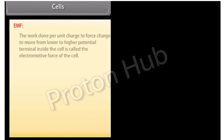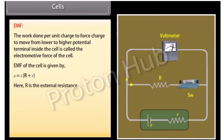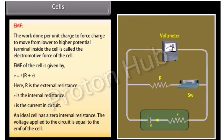The work done per unit charge to force charge to move from lower to higher potential terminal inside the cell is called the electromotive force (EMF) of the cell. EMF is given by E = I(R + r), where R is the external resistance, r is the internal resistance, and I is the current in the circuit. An ideal cell has zero internal resistance, and the voltage applied to the circuit equals the EMF of the cell.